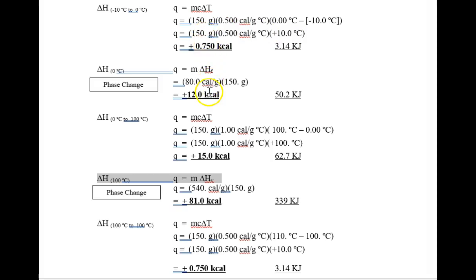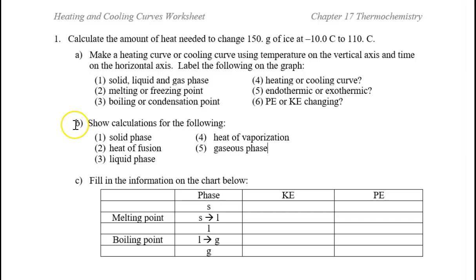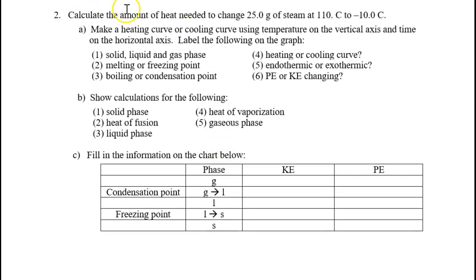Lastly, add all five stages together to get the overall enthalpy or heat flow from minus 10°C ice all the way to 110°C steam. Adding all five stages gives approximately positive 110 kilocalories, or 458 kilojoules — an endothermic reaction. For part C of the worksheet, you will use an exothermic reaction to calculate the heat needed to change 25 grams of steam from 110°C down to minus 10°C. Everything is the opposite: similar equations but the mathematical sign will be negative for each stage, and the total will be a negative exothermic heat flow.